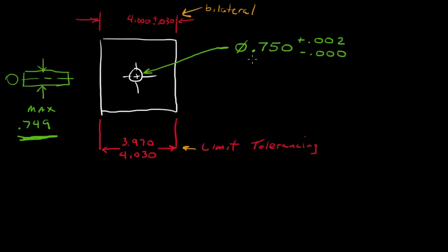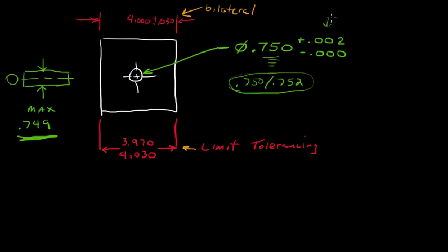That is still the limit of 0.750 to 0.752 that we had before, just displayed differently. What's implied is that he's targeting 0.750, but allowing tolerance for manufacturing — we can overshoot the size of that hole if our drill drills a little bit oversized or whatever. This is called unilateral tolerancing — one way, one direction — all the tolerance is to the plus side, in the positive direction.